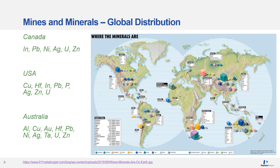Where are the mines and minerals spread across the globe? This is a great visual showing the distribution of metals and minerals across various regions. As you can see, some regions or countries are richer in minerals than others. For example, Canada, Brazil, South Africa, and Australia, among others, are rich in minerals, whereas other countries like Western Europe have very few.